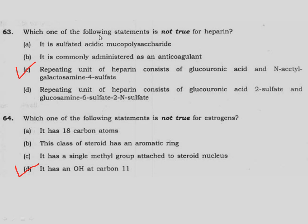Question 63: Which one of the following statements is not true for heparin? Heparin is a sulfated acidic mucopolysaccharide — true. It is commonly administered as an anticoagulant — true. Repeating units consist of glucuronic acid 2-sulfate and glucosamine 6-sulfate 2N-sulfate — true. Option C states repeating units consist of glucuronic acid and N-acetyl galactosamine 4-sulfate — this is not correct for heparin.